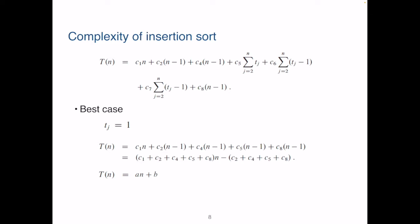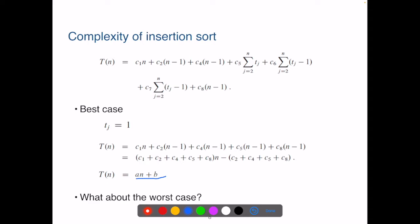What about the worst case? When the input list is in the reversed order, now tj equals j, meaning that for each key number we perform j minus one swaps in order to move it to the front of the sorted left portion of the list. So we use this to replace all the tj's in the formula and we get a quadratic function of n. That is, in the worst case insertion sort takes quadratic time.